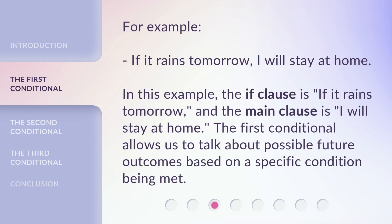For example: if it rains tomorrow, I will stay at home. In this example, the IF clause is 'if it rains tomorrow,' and the main clause is 'I will stay at home.' The first conditional allows us to talk about possible future outcomes based on a specific condition being met.